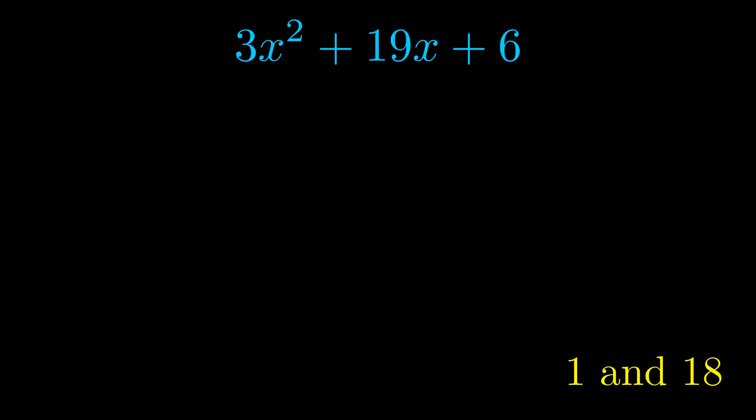Notice how I'm going to keep my first term and my last term completely unchanged. It is only this b term highlighted in yellow that gets expanded into this correct factor pair. Once we've done this we go ahead and we put parentheses around the first term and the last term, and we do that so that we can take the greatest common factor out of both terms.